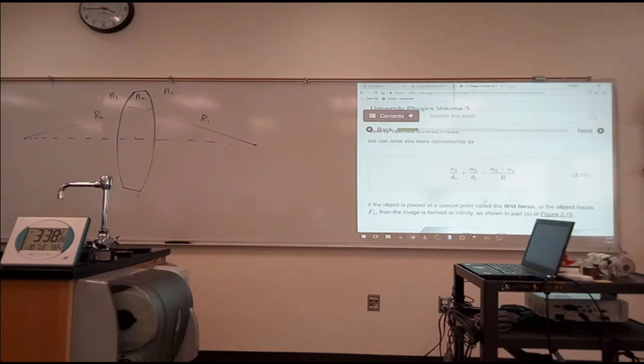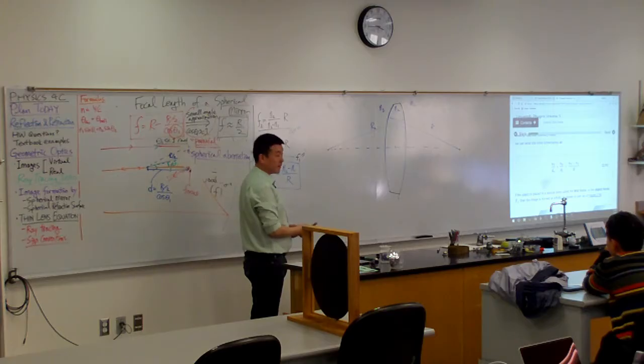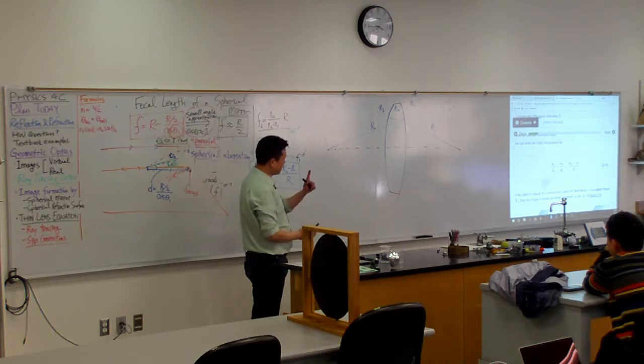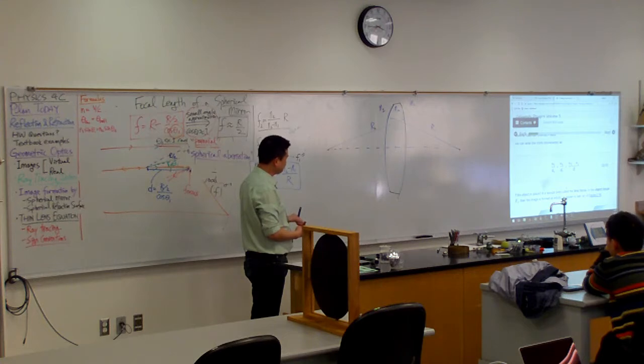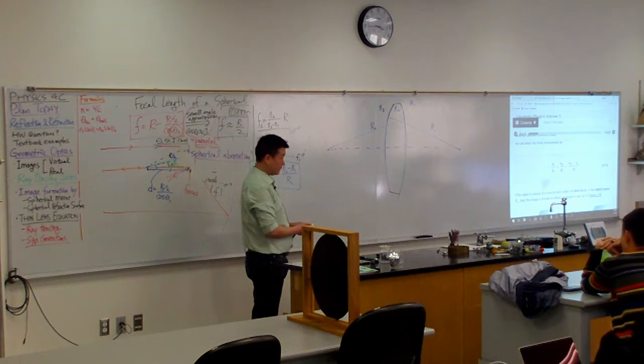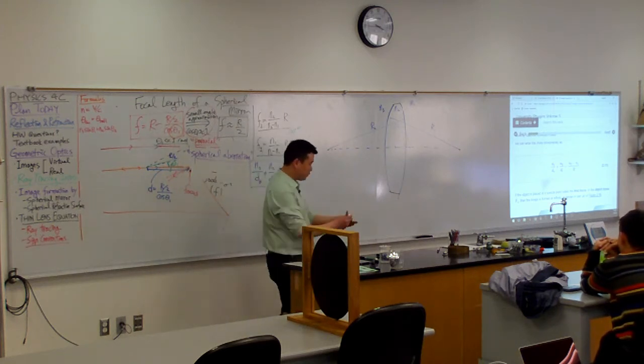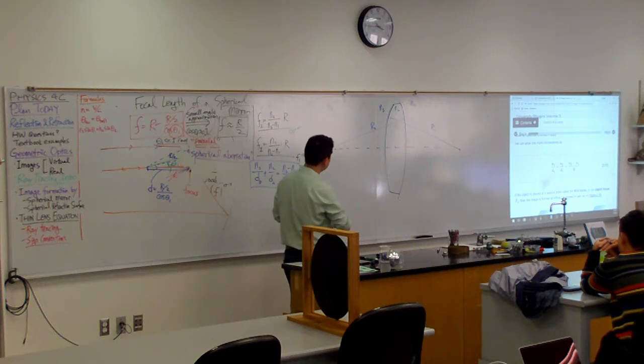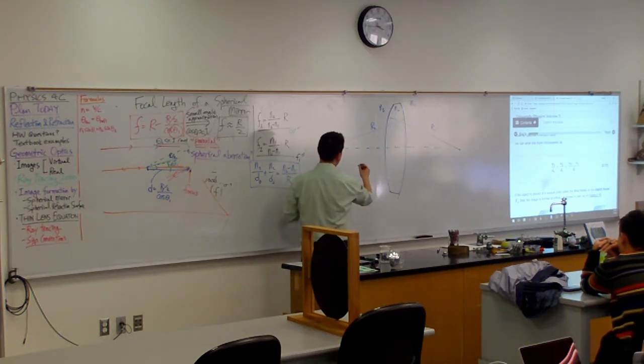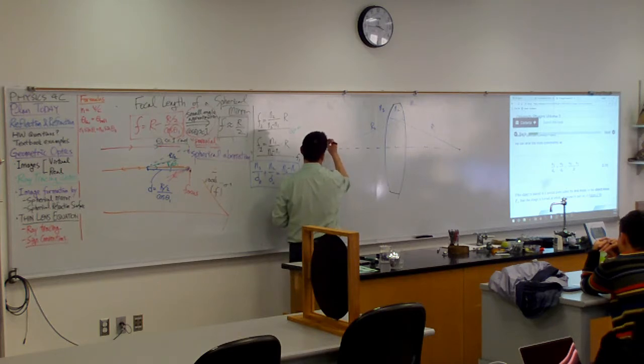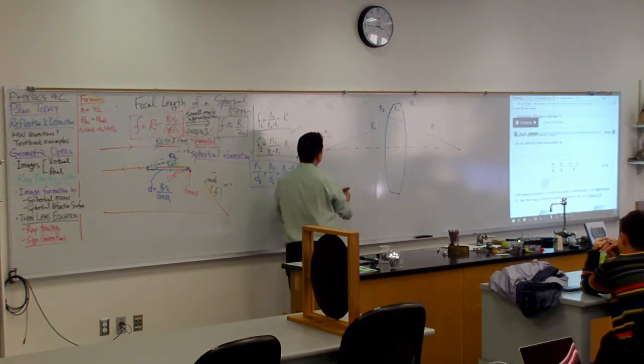So what we want to look at is what is the focal length, or not focal length, how does the light, when a ray of light goes through, how does it reflect? So I mean, I can draw it qualitatively. Let me start out with that. So if I have an object out here, let me just draw an arrow.